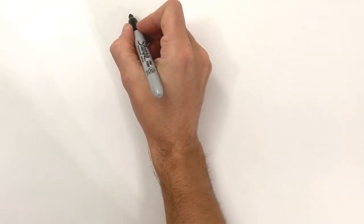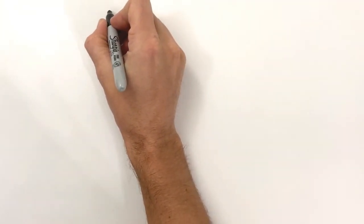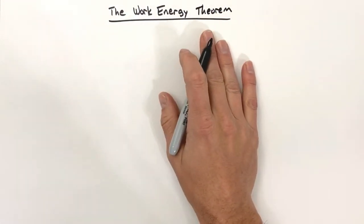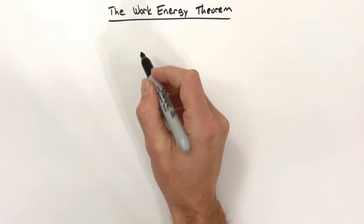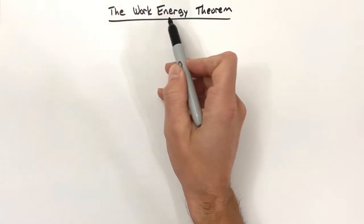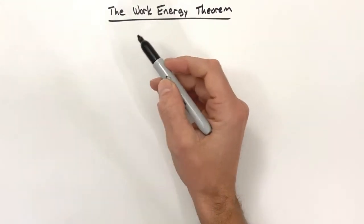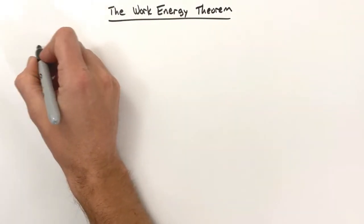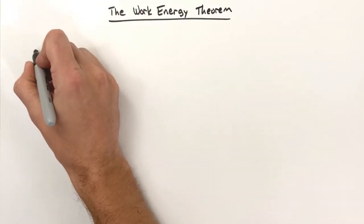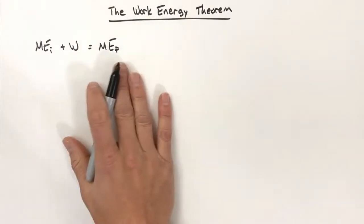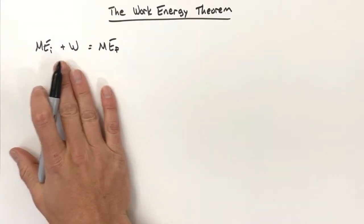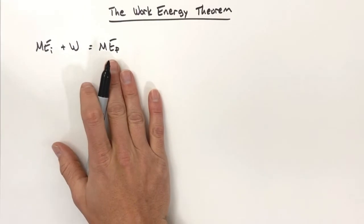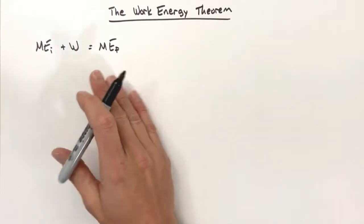Today we're talking about the work-energy theorem. What this theorem — really equation or formula — does is it relates the work done on an object to the mechanical energy of a system. The basic version states: the initial mechanical energy of an object plus the work done on that object equals the final mechanical energy of the object.